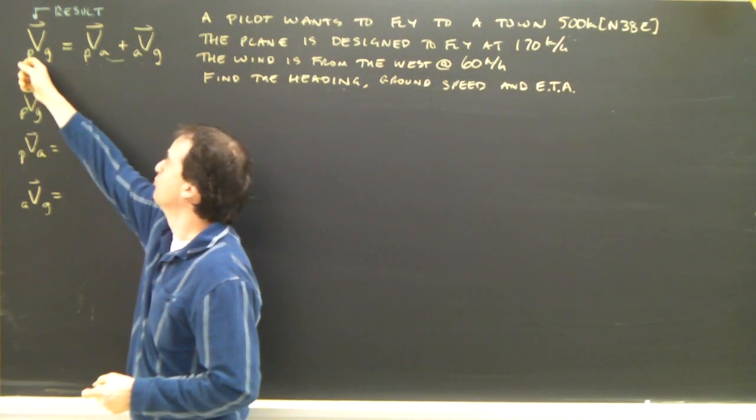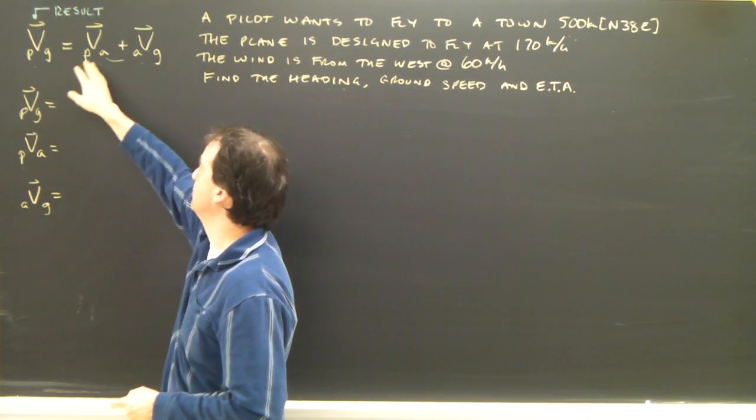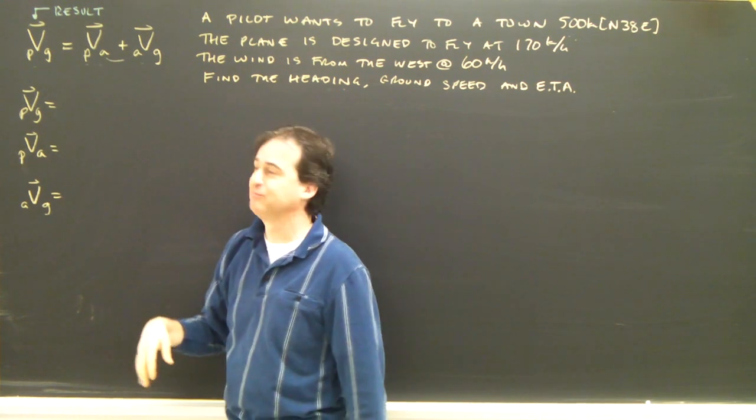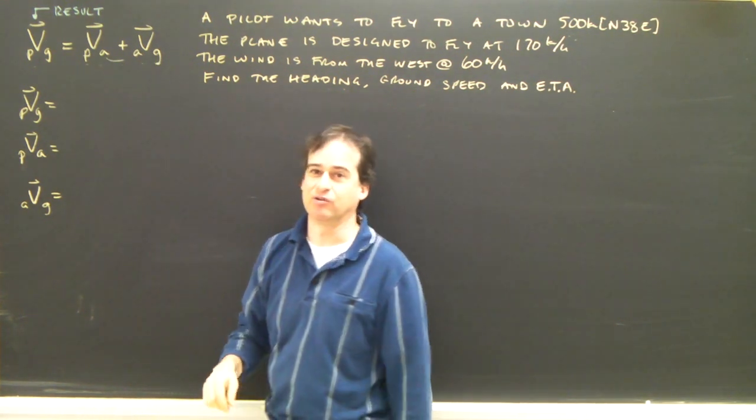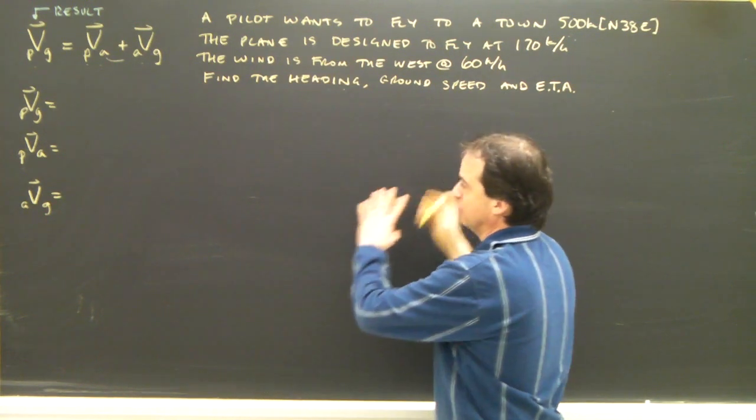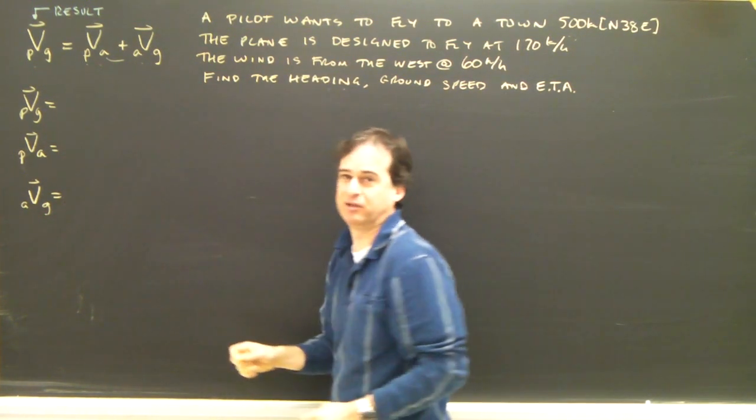Remember our equation is, whatever happens to the plane, the result of what it's doing, is made up of the plane flying in the air and the air moving relative to the ground. So let's look at the question, pick out the numbers we can, put them in here, and then plug away.